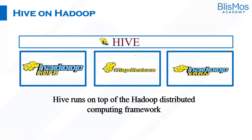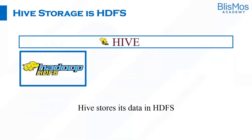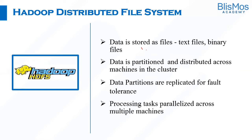Hive runs on top of the Hadoop distributed computing framework and is part of the Hadoop ecosystem, but the core components are HDFS, MapReduce, and YARN. HDFS stands for Hadoop Distributed File System. Hive stores its data in HDFS — even though Hive is a data warehouse, it does not take responsibility for storing data on its own.